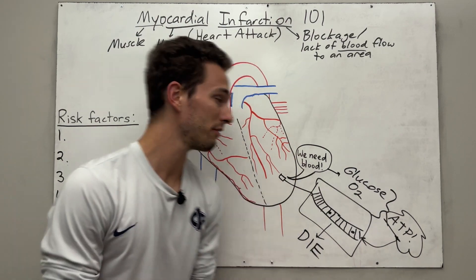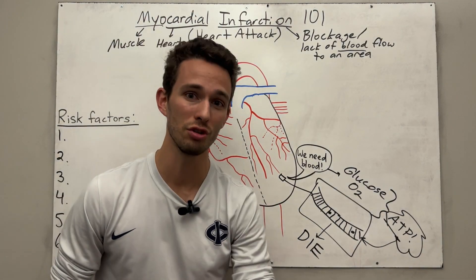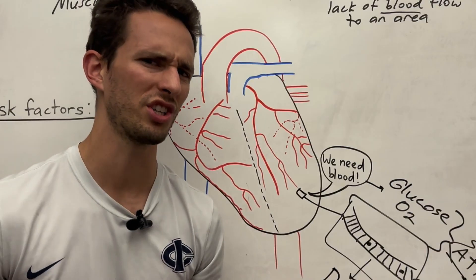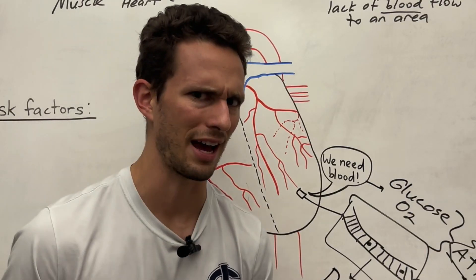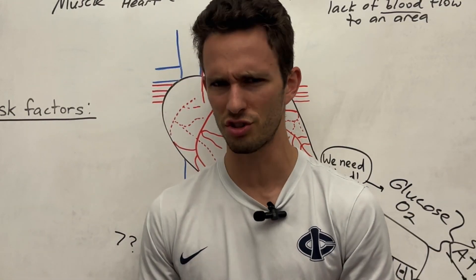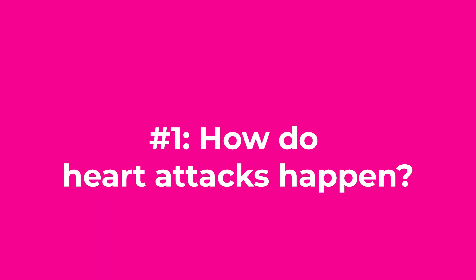And that is what a heart attack is — the lack of blood flow to the heart muscle itself, leading to cell death in the heart muscle tissue. The question is: how does this happen, and what are some risk factors associated with it? Let's talk about it.